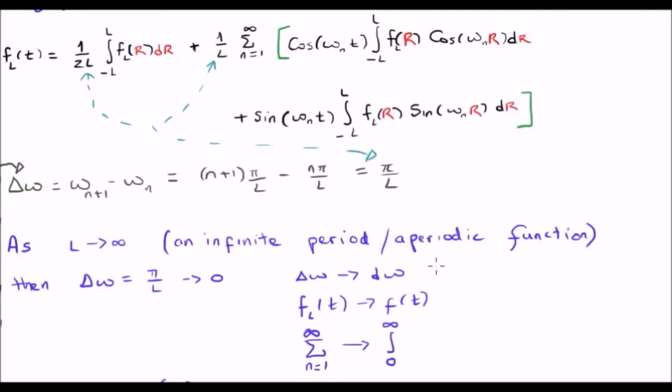The usual things from integrals come in. We get Δω becoming dω. We have the periodic function f_L(t) becoming the aperiodic or continuous function f(t). And we have our discrete summation becoming our continuous integral. It's important to note that the start point of our integral is zero. All of this happens because we move from discrete omega to continuous omega. And we're nearly there.